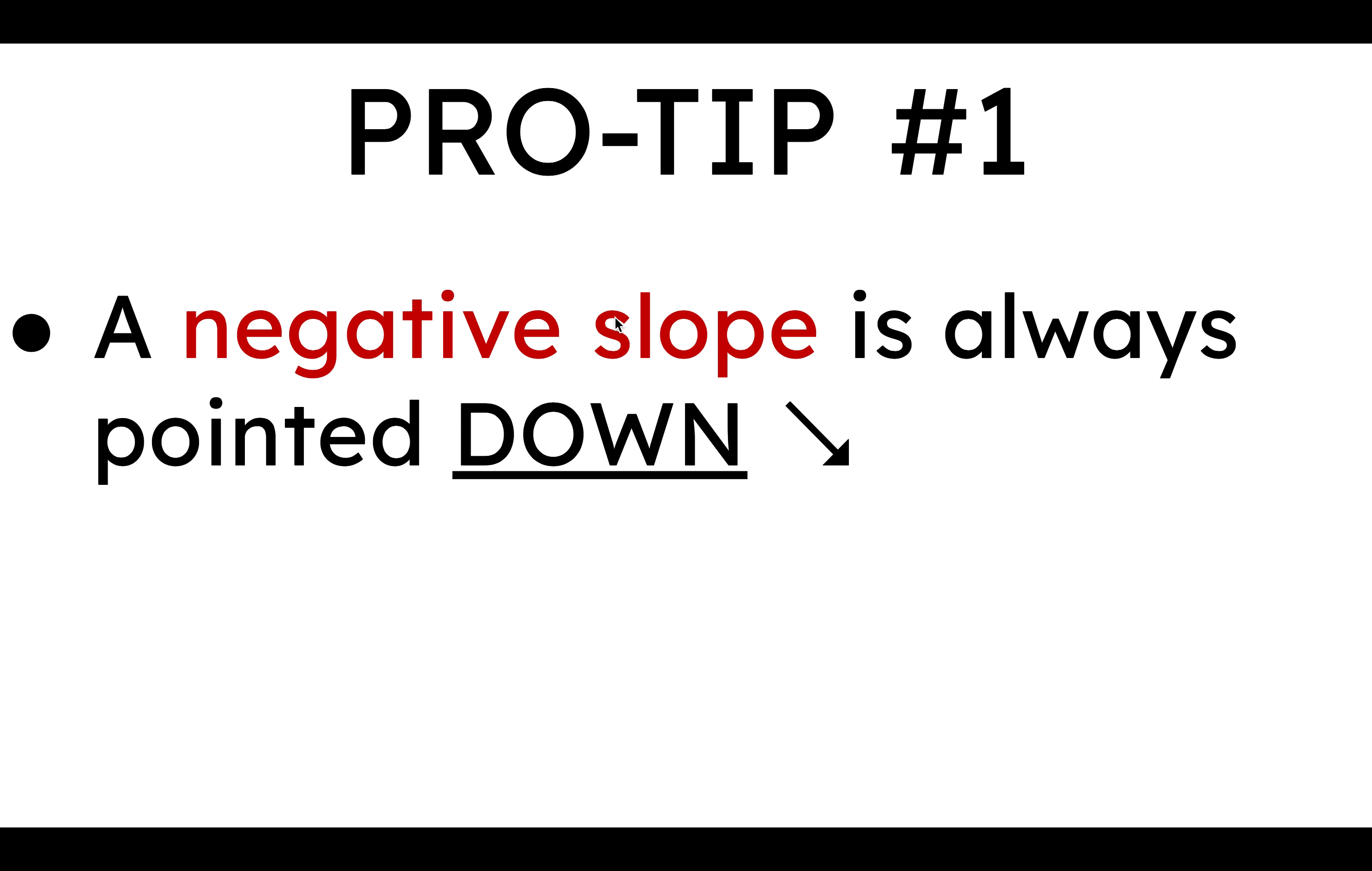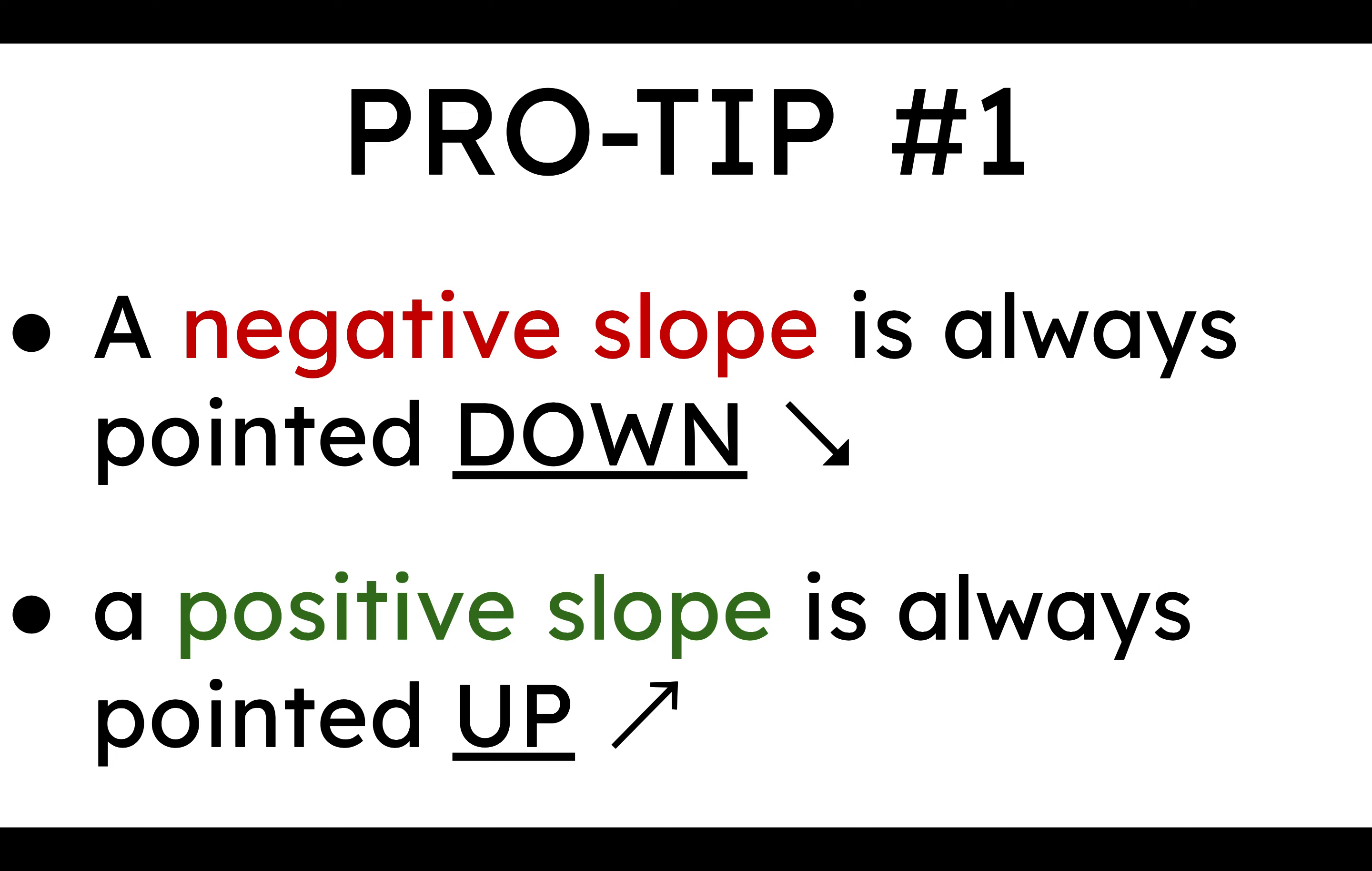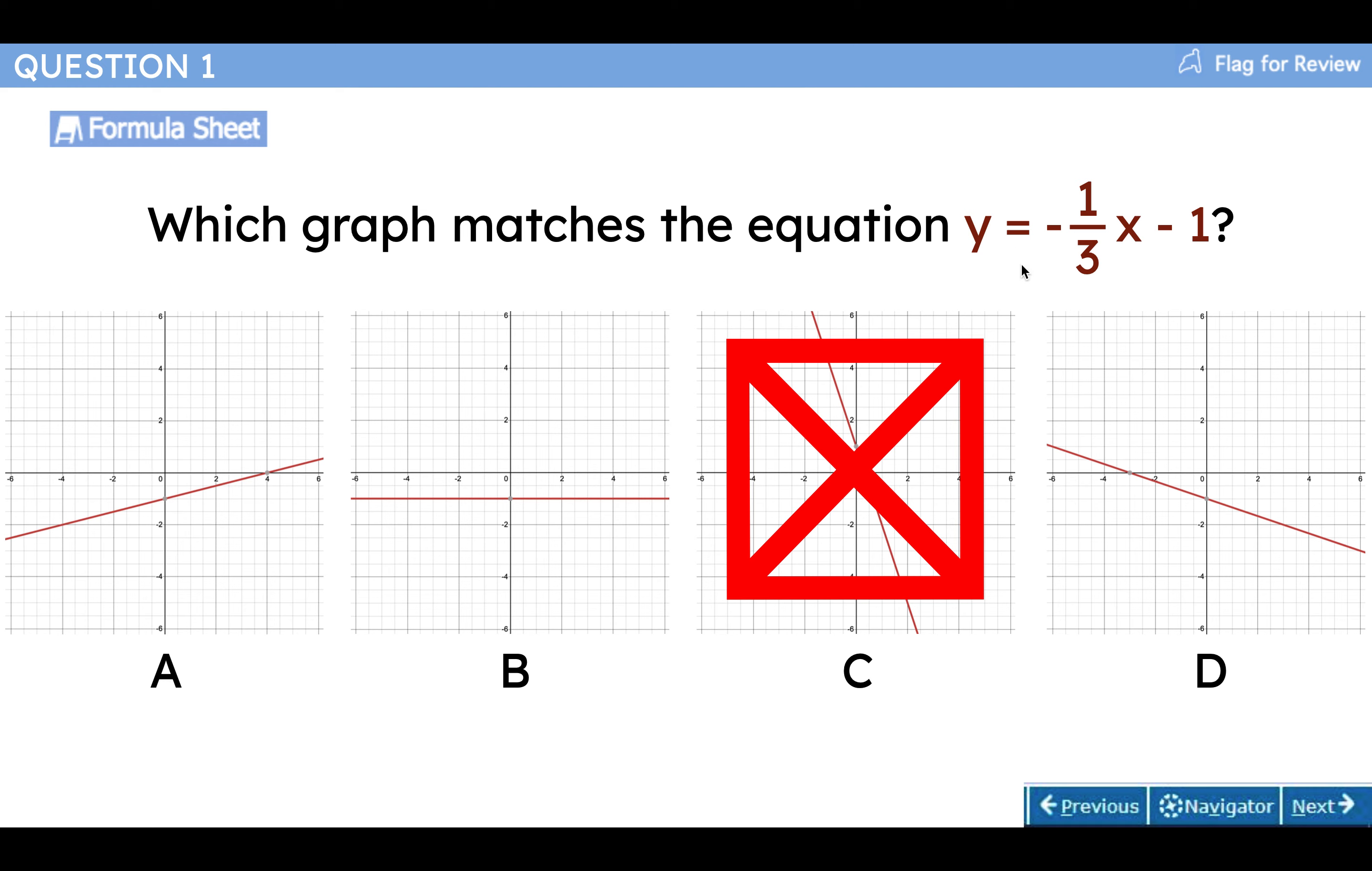Let's go back and think about the slope for a minute. Here's my first pro tip. A negative slope is always pointed down. That's if you're on the road, you're going downhill. And if you're going uphill, then it's a positive slope. Well, remember our equation here. This is a negative slope, negative one third.